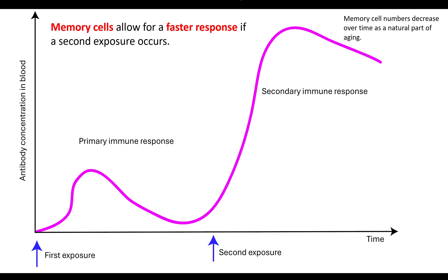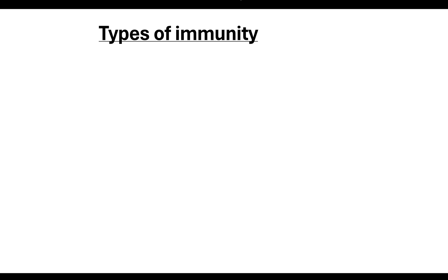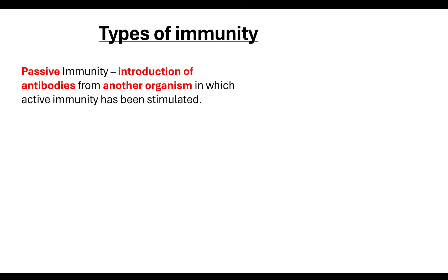This is important to remember because when we look at the types of immunity that you can have, there are different types. The first one I want to look at is passive immunity. If you have passive immunity, this is where you have had antibodies introduced to the body which have come from another organism.